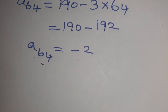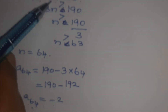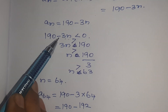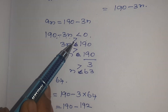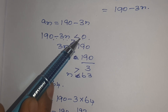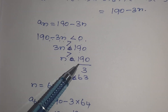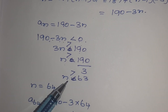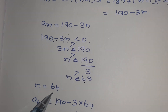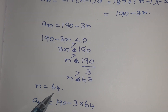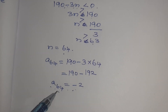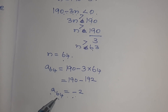So here, 190 - 3N < 0 gives 3N > 190, so N > 190/3, N greater than 63. We try N = 64 and we got the negative term. Therefore the answer is A64, and the first negative term of Madhuri's AP is -2.